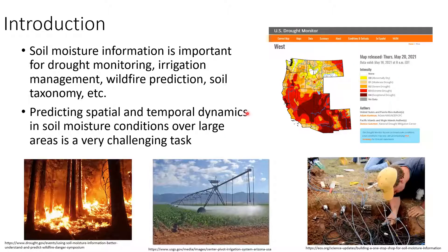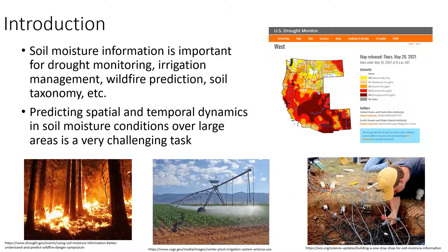Most of us know that soil moisture information is really important as a soil property for a variety of applications, including drought monitoring, irrigation management, and we're now using soil moisture for wildfire prediction. Of course, we use soil moisture information for taxonomy and a variety of other different applications. One challenge with obtaining soil moisture is that we have to install networks of soil moisture sensors, which can get challenging with respect to time and financial constraints. So we use those networks as best we can, but we also rely a lot on predictions of things like drought from meteorological data to represent soil moisture dynamics.